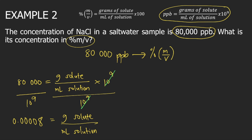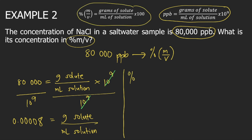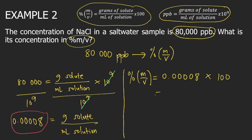Now that you have grams of solute divided by mL of solution, use the formula for percent mass per volume. Percent mass per volume equals grams of solute divided by mL of solution — which is 0.00008 — multiplied by 100. This equals 0.008% mass per volume. This is the answer.